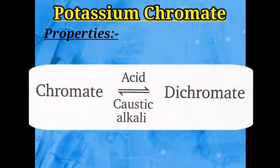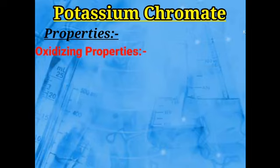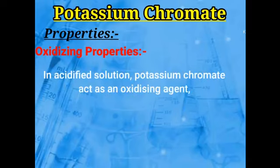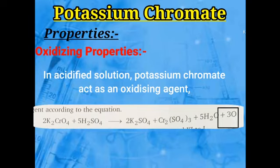Now we see the oxidizing property of potassium chromate. Potassium chromate behaves as a very good oxidizing agent. An oxidizing agent is a compound that itself gets reduced while oxidizing the other compound — increasing its oxidation state toward the positive side. Potassium chromate behaves as an oxidizing agent in acidic medium (in presence of H₂SO₄).